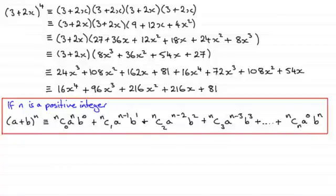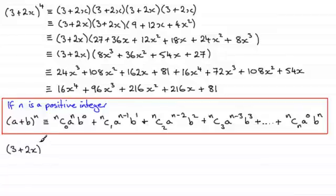Let me just demonstrate how we can use this for (3 + 2x) to the power 4. If we've got (3 + 2x) all to the power 4, then a is the 3, b is the 2x, and n is the 4.